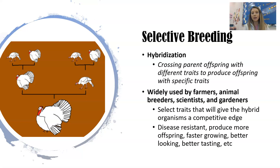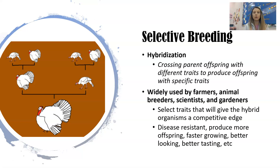There are different forms of selective breeding. First is hybridization, where you take parents that have different traits and cross them to produce offspring with very specific traits. This is widely used by farmers, animal breeders, scientists, and gardeners, who are typically selecting traits that give the hybrid offspring some competitive advantage. For example, farmers take their best tasting, sweetest fruits and cross two varieties to produce a fruit with both traits that sells better in grocery stores.